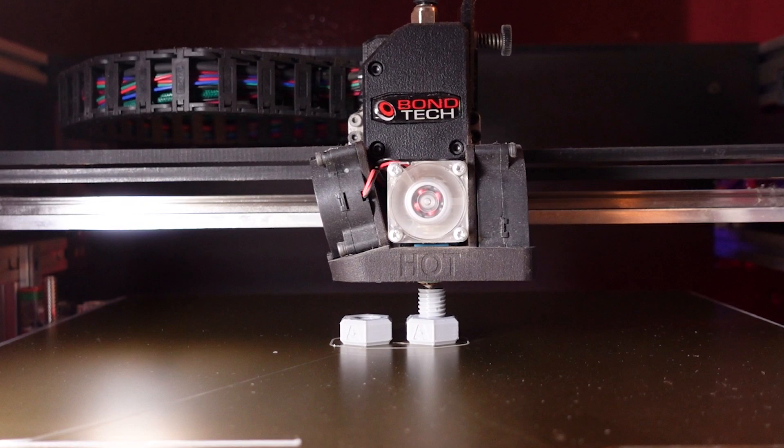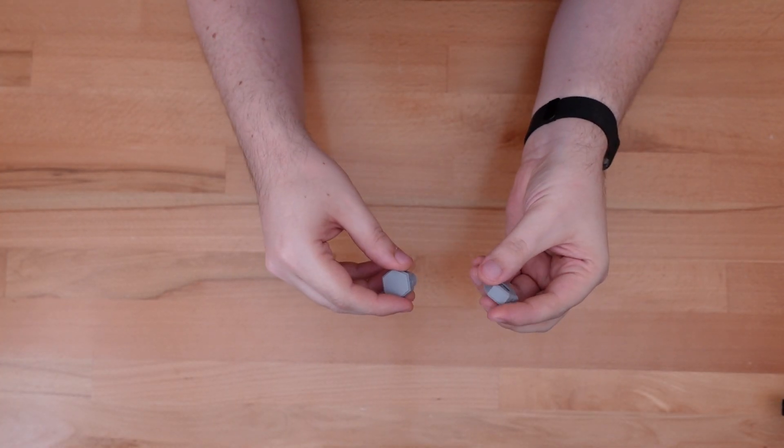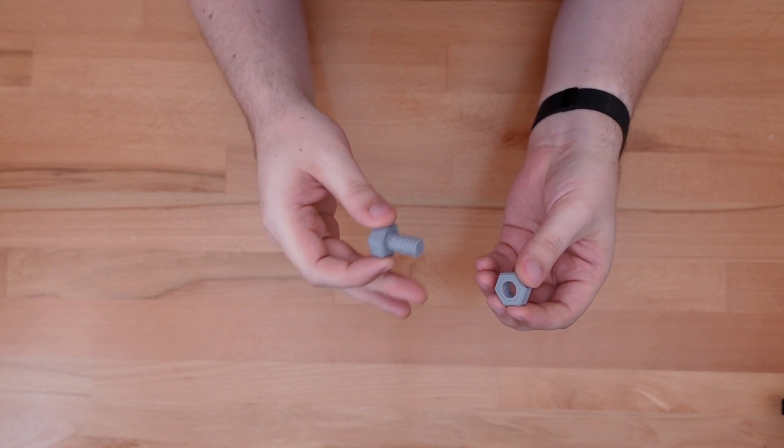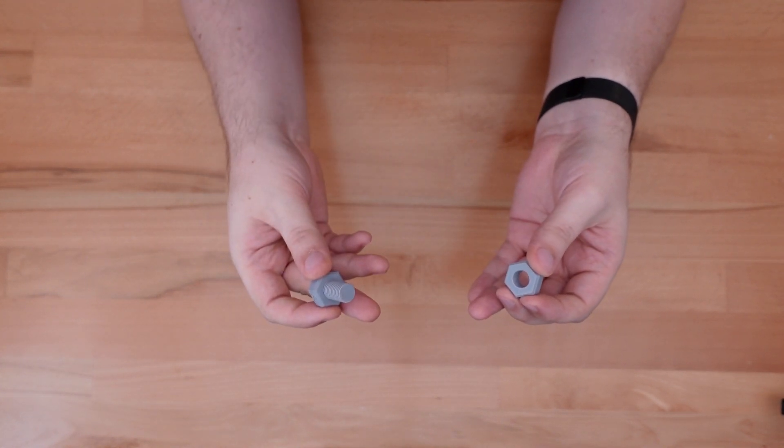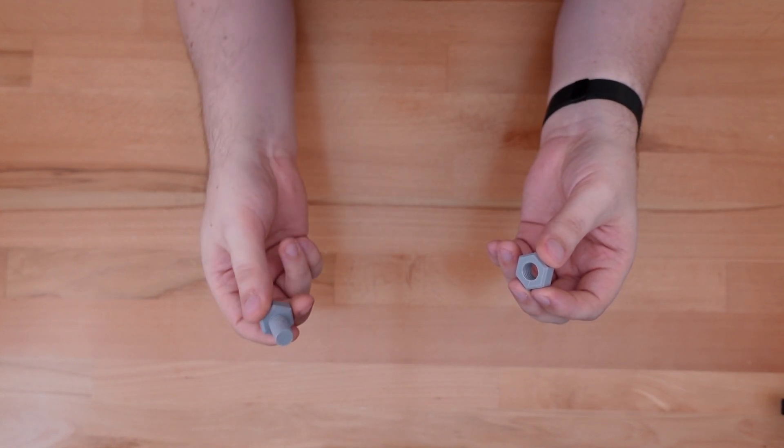Let's print out a copy and see how it works. I labeled this a type A thread - it's just the default tolerances. I printed this with two perimeters and 15% infill. Nothing too extreme, but beefy enough that it won't snap unless you really tried to break it.